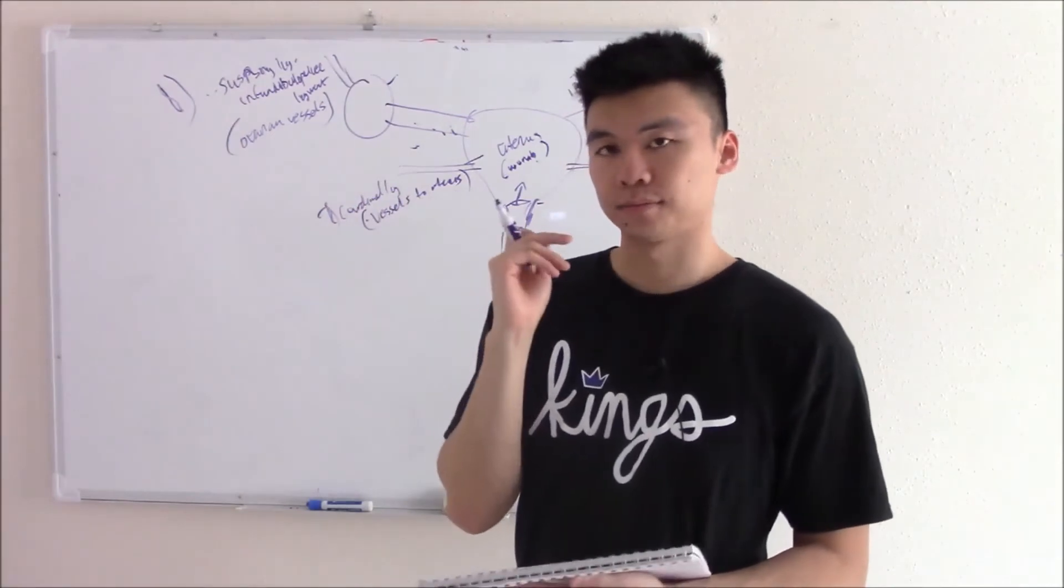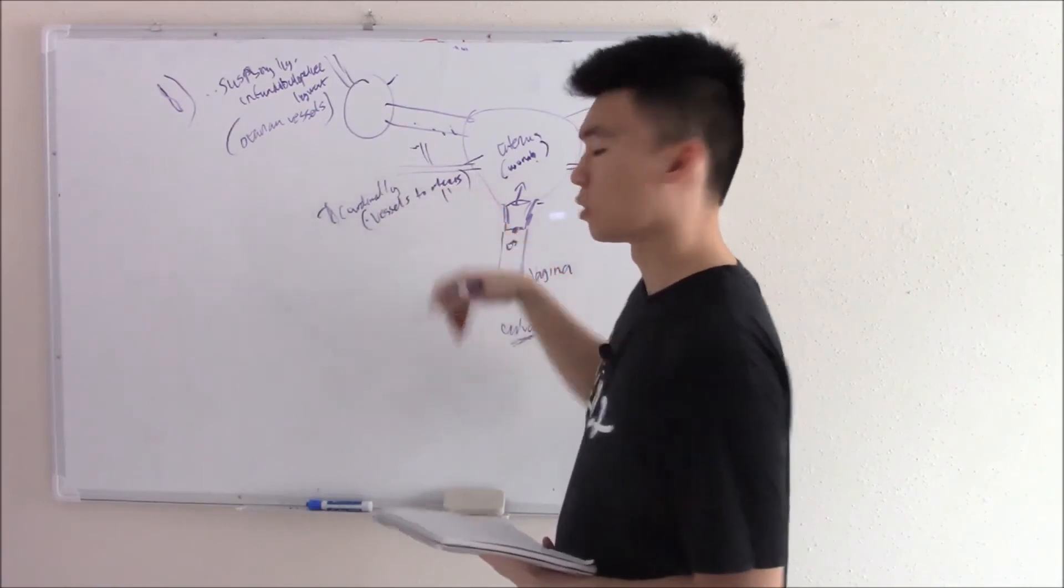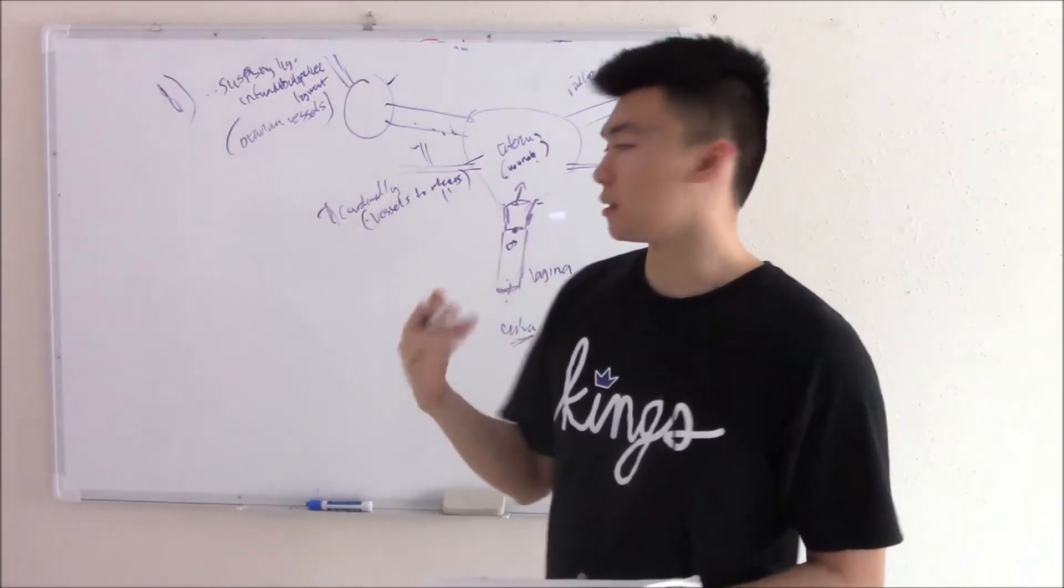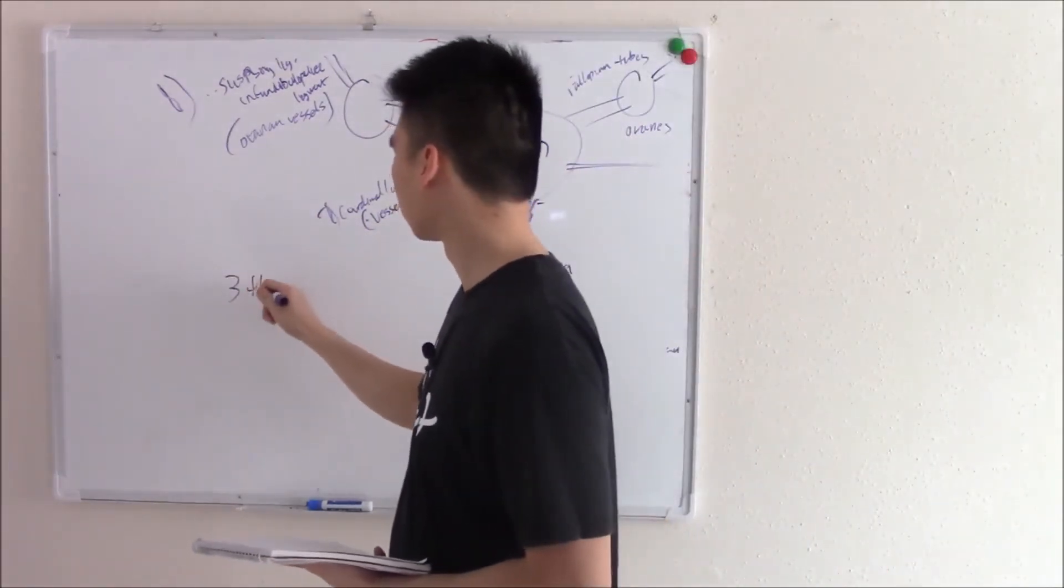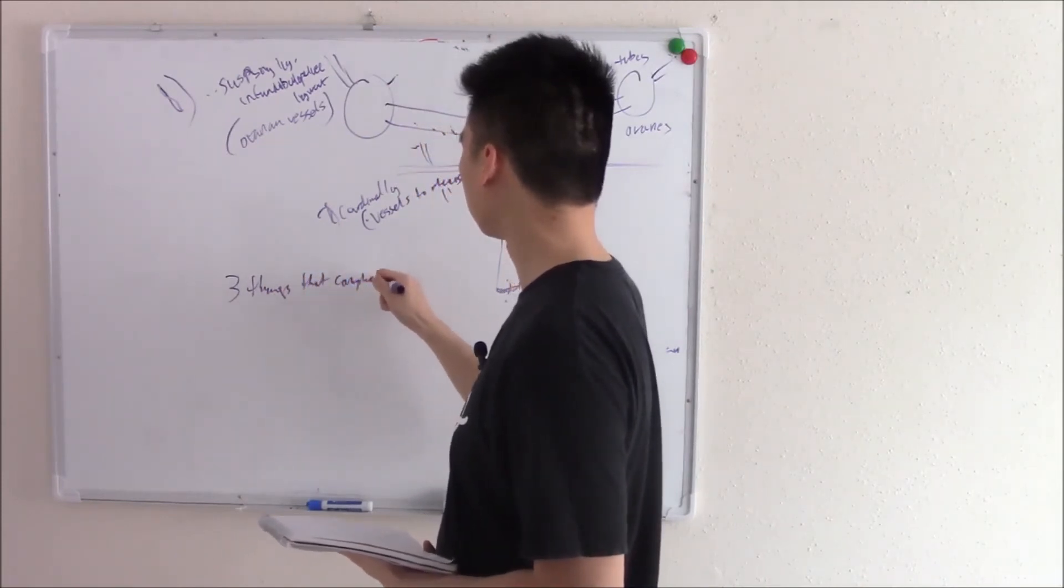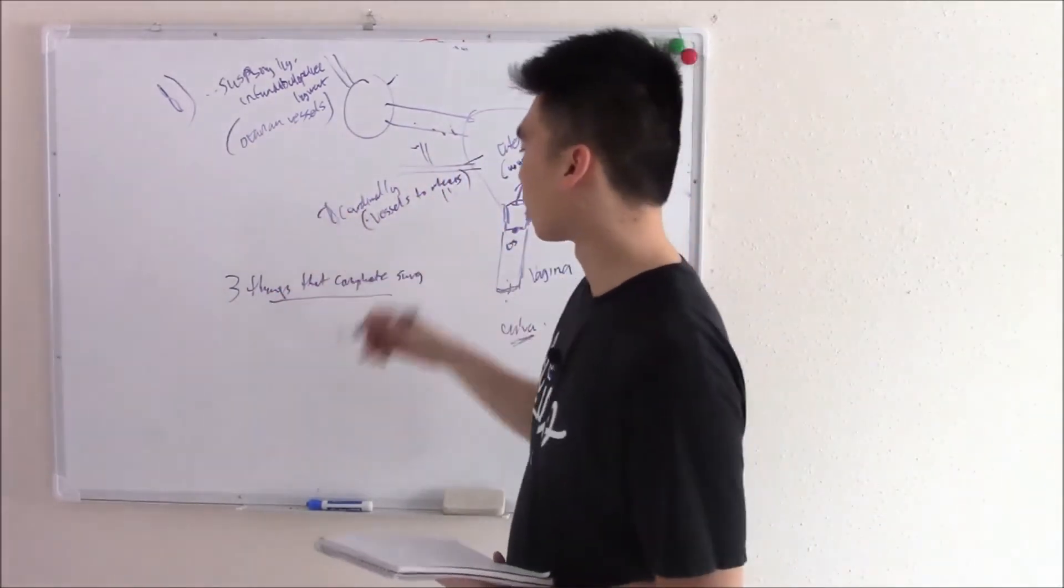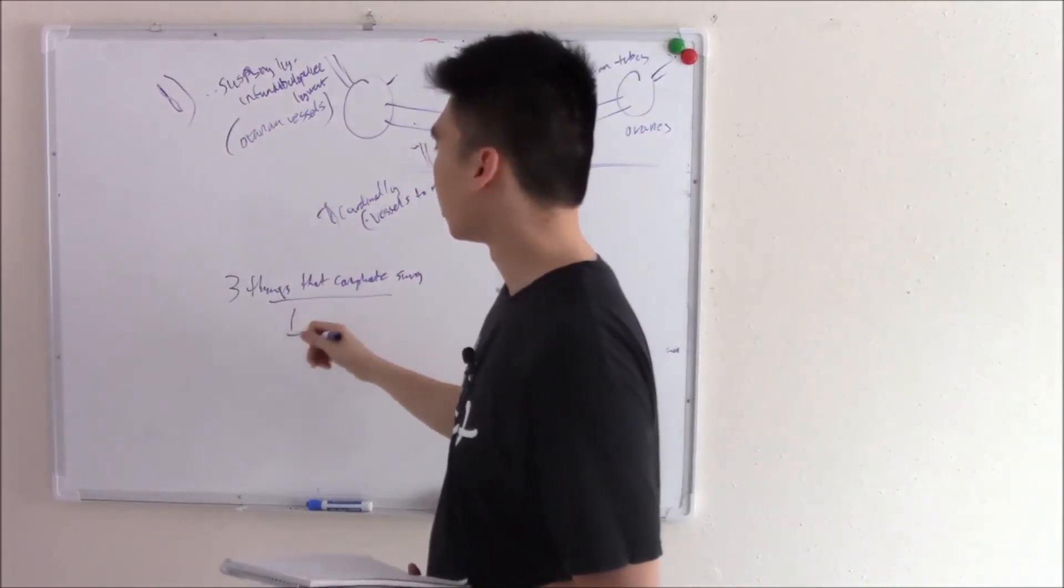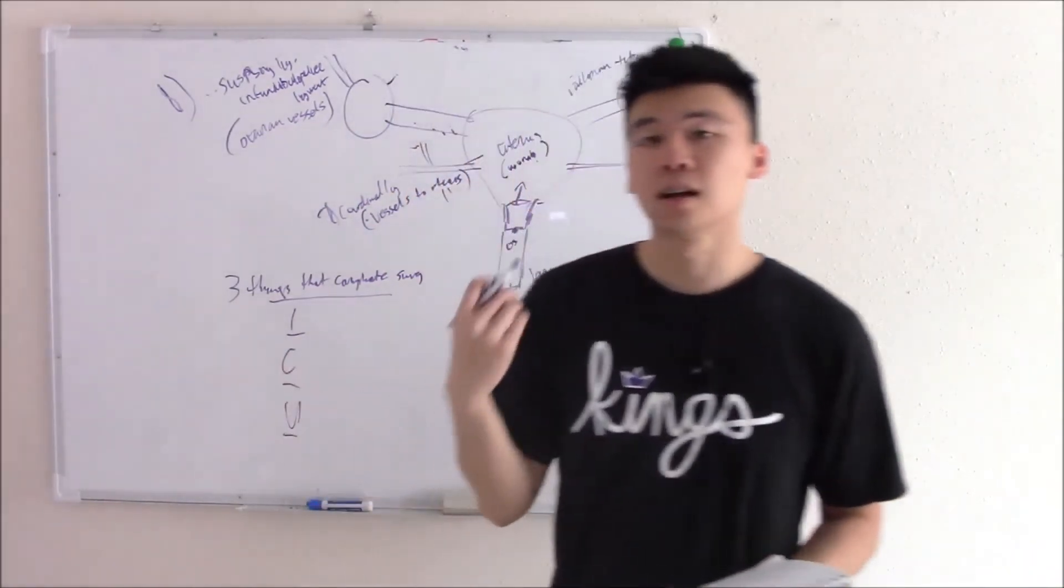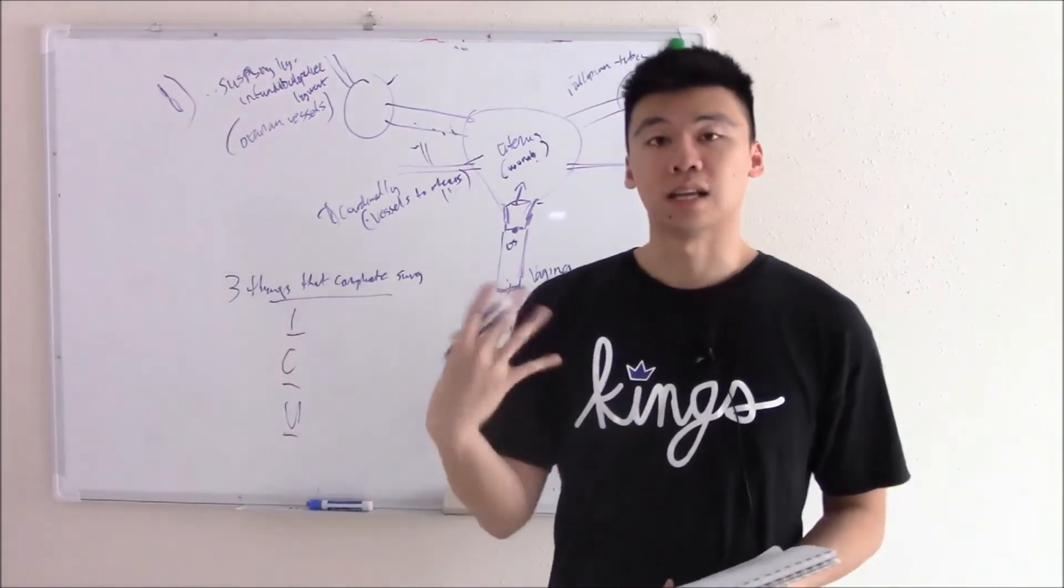One thing that's not a ligament that you need to know is that your ureters, which drain your kidneys to your bladder, go under the cardinal ligament and can be damaged if you try and cut it. So the three main things that complicate surgery are the ligaments that hold the vessels and the ureter. So your infundibulopelvic ligament, your cardinal ligament, and your ureters, or ICU. That's a helpful way to remember that. If you cut any of the ICUs, you can have complications.